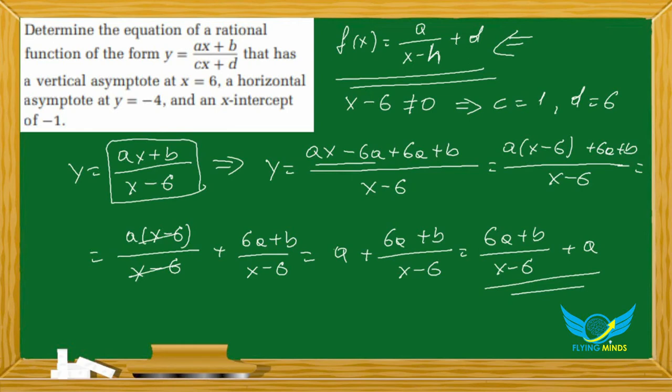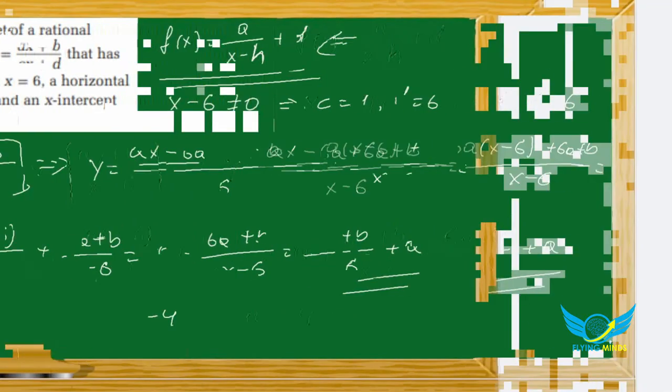So a is our horizontal asymptote, which equals negative 4. So a equals negative 4. What's left is to find the value of b, which we're going to do on the next page.